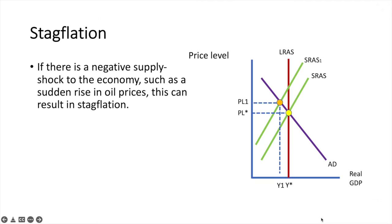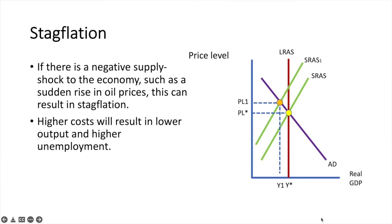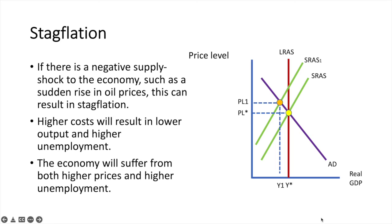If there is a negative supply shock to the economy, such as a sudden rise in oil prices, this can lead to stagflation. Higher costs will result in lower output and higher unemployment. The economy will suffer from higher prices, lower output, and higher unemployment.